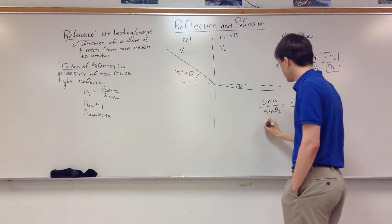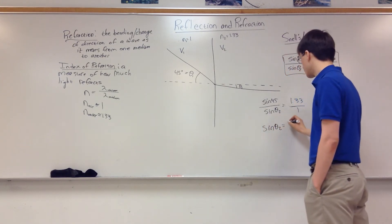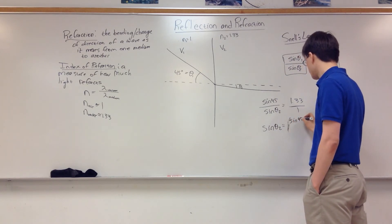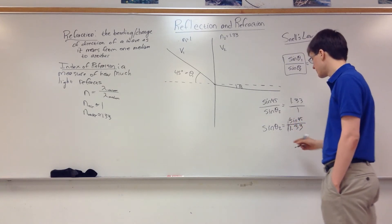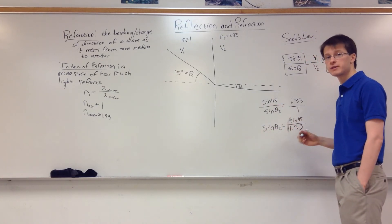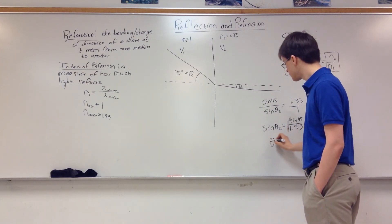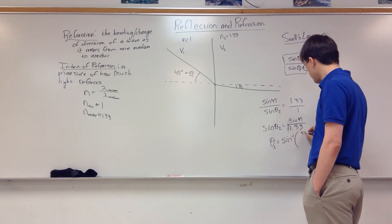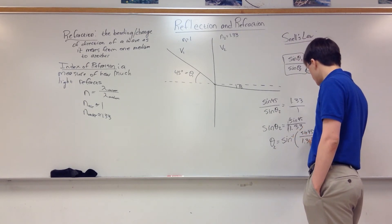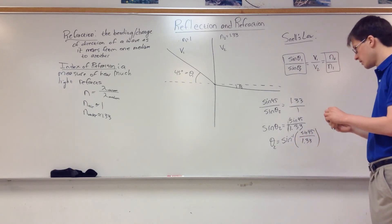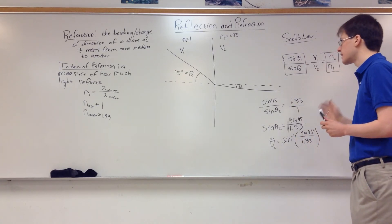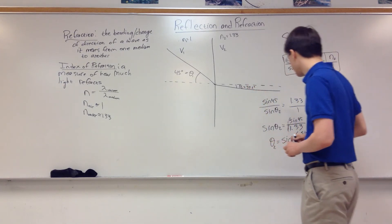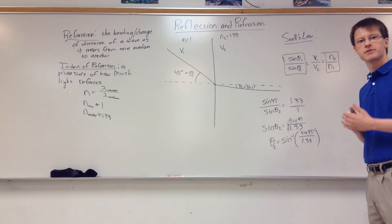So solving this you have sine theta 2 is equal to sine 45 divided by 1.33. And then to actually get angle 2 you need to take the inverse sine of both sides, so theta 2 is equal to the inverse sine of sine 45 over 1.33. And you plug that into your calculator and get an answer. I think it comes out to be something like 32.1 degrees. So you can see that it does change direction and bend.